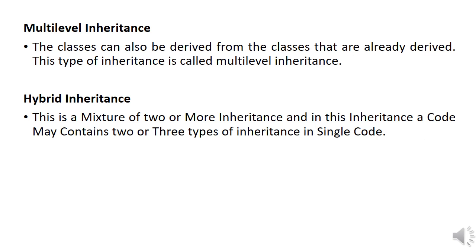In multi-level inheritance, a class can be inherited from a class that is already derived. In hybrid inheritance, it is a mixture of two or more inheritance types, so a program may contain two or three types of inheritance in a single code.